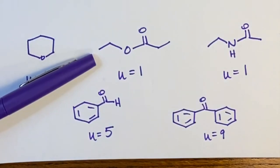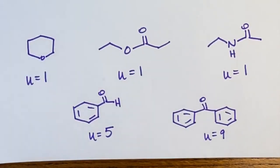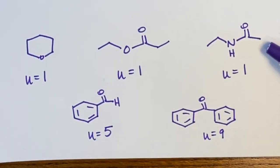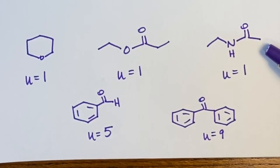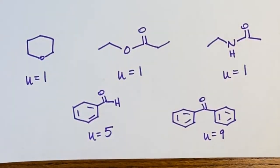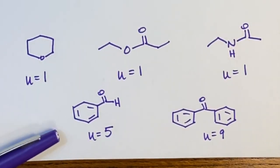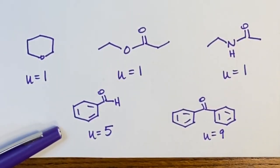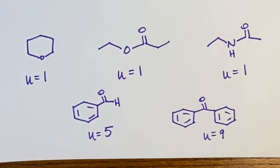A molecule with 1 pi bond has U = 1, and another molecule with 1 pi bond also gives U = 1. Remember that benzene represents 4 units of unsaturation — 3 from the double bonds and 1 because it's a ring — so a structure containing benzene has 4 units of unsaturation from that ring alone, giving a total of 5 with an additional substituent.